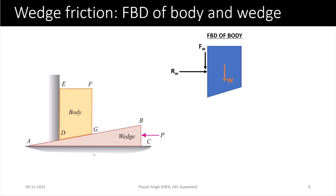We have two forces Rw and Fw. Their resultant can be represented by a force R1, which makes an angle phi with Rw. This angle phi is the angle of friction — the angle made by the resultant of the frictional force and the normal reaction with the normal reaction. So Rw and Fw can be represented by a single resultant force R1.